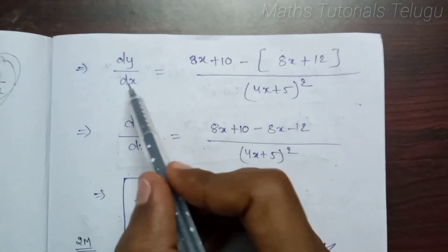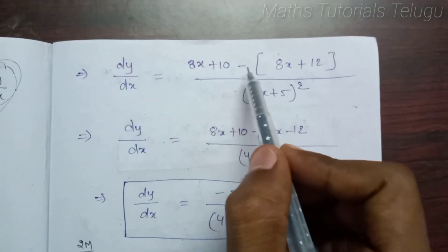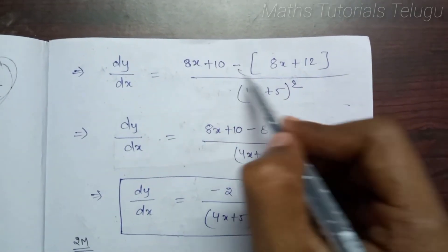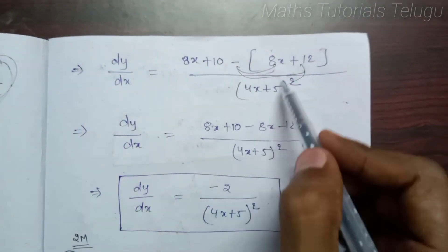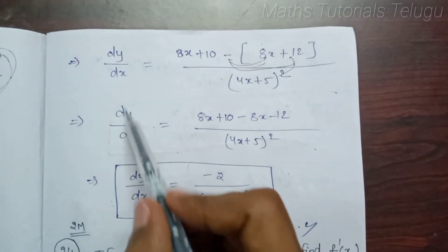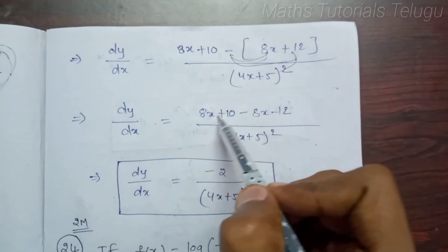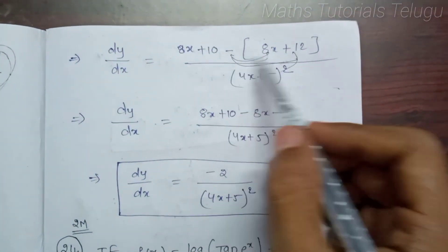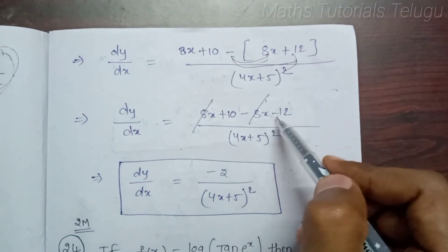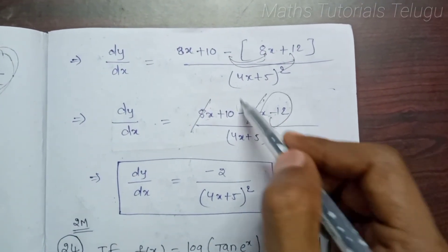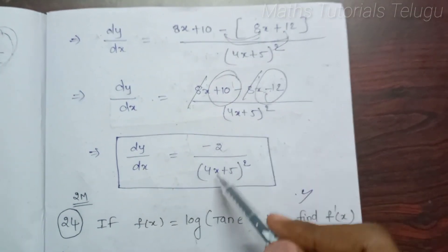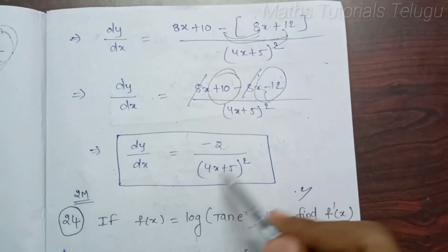Now dy by dx is equal to 8x plus 10 minus of 8x plus 12, divided by (4x plus 5) whole square. So dy by dx equals 8x plus 10 minus 8x minus 12. The 8x terms cancel. Minus 12 plus 10 is minus 2. So dy by dx is equal to minus 2 divided by (4x plus 5) whole square.